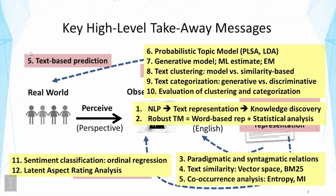We also talked about Latent Aspect Rating Analysis (LARA), an unsupervised method using a generative model to understand review data in more detail. It allows us to understand the decomposed ratings of a reviewer on different aspects of a topic — given text reviews with overall ratings, the method infers ratings on different aspects. It also allows us to infer the reviewer's latent weights on these aspects, revealing which aspects are more important to the reviewer, enabling many interesting applications.